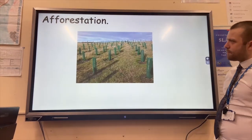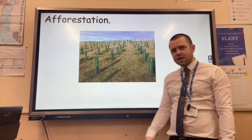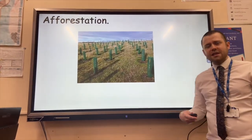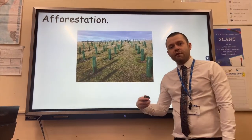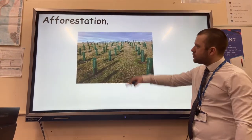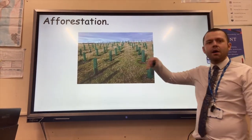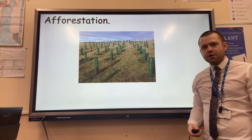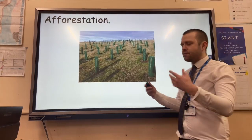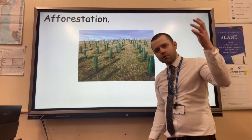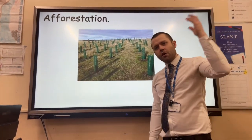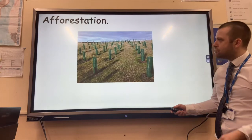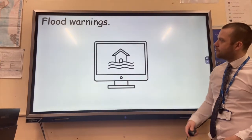The next example is afforestation. Planting trees is a natural way to reduce river flooding, as when the trees grow, vegetation interception is increased and the time it takes for water to get from the sky to the river is increased, thus reducing flood risk.